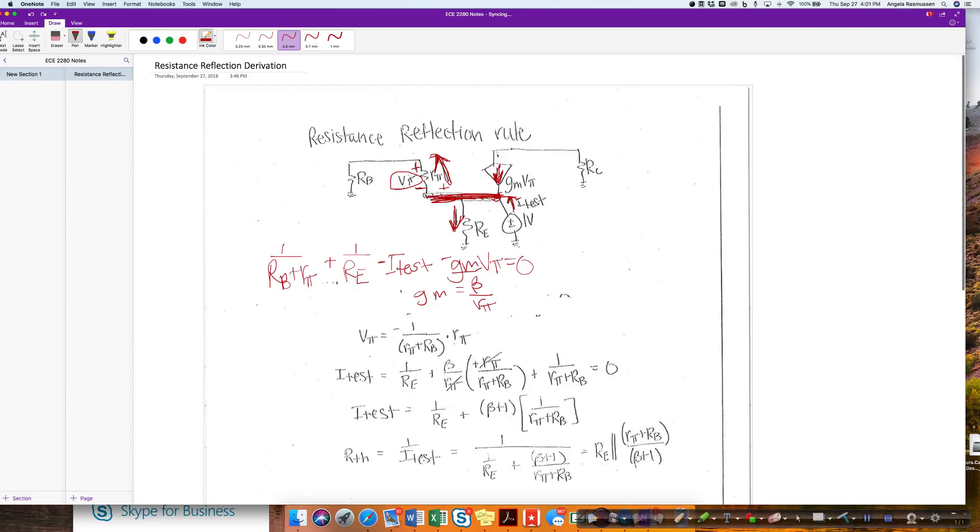This is going to be a plus to a minus, and then this is plus to minus. With that opposite, the current flow in that branch was 1 over rpi plus rb, and you get the negative sign there. And then you multiply it by rpi.